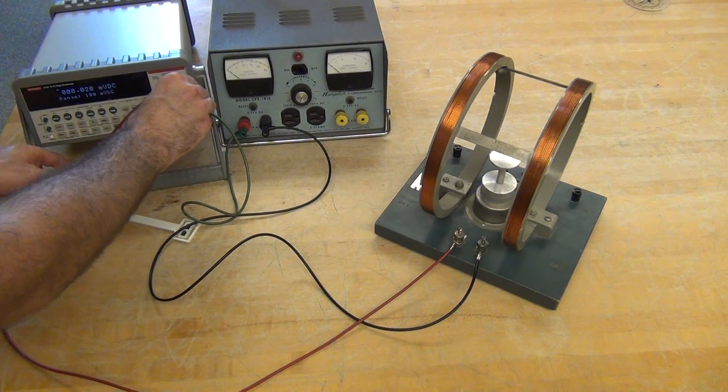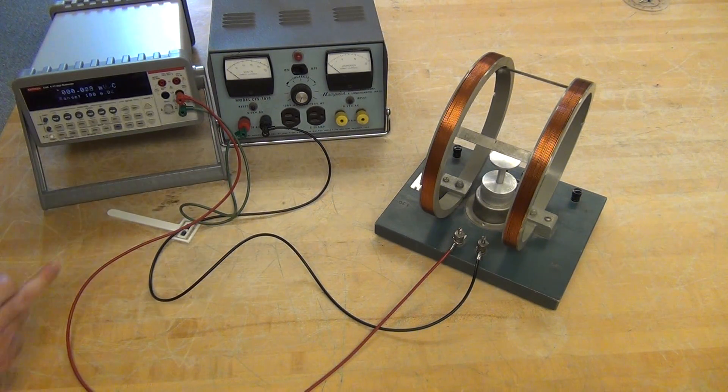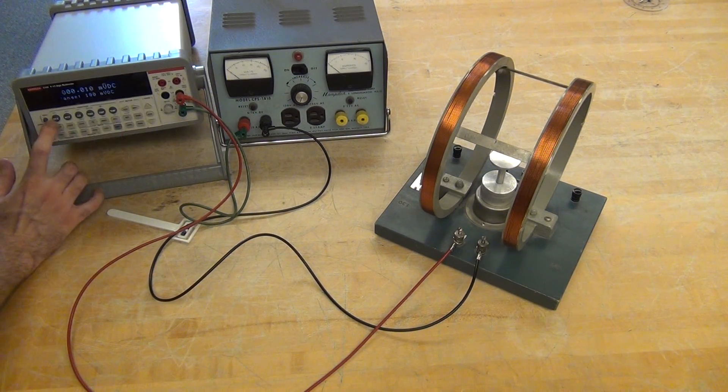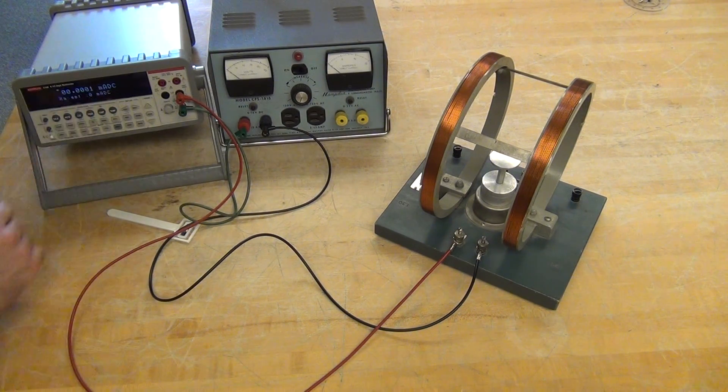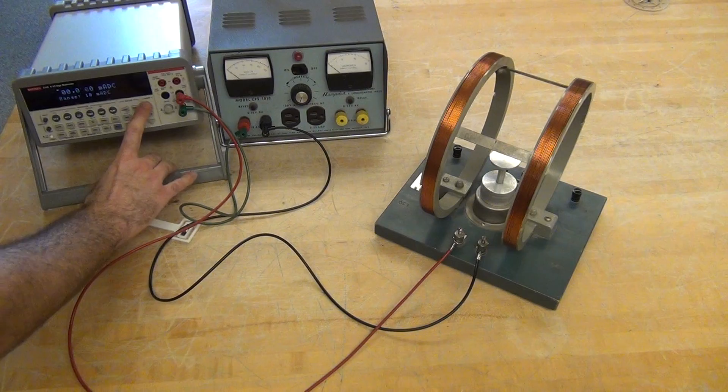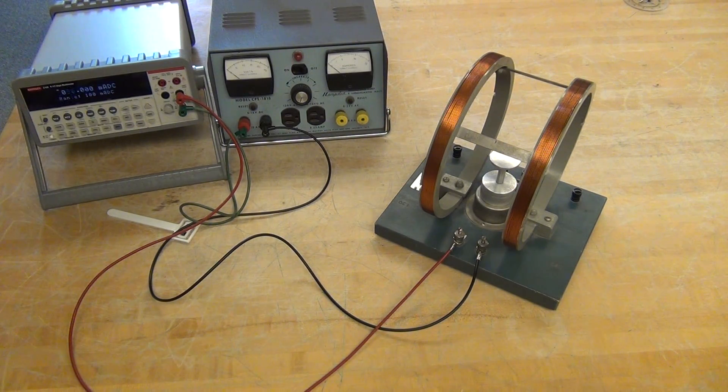Normally the Keithley defaults to measuring voltage, we'll want to switch to measuring current. Use the shift button and now we're in milliamps DC, 10 milliamps maximum range. We'll change that range to 100 milliamps DC.